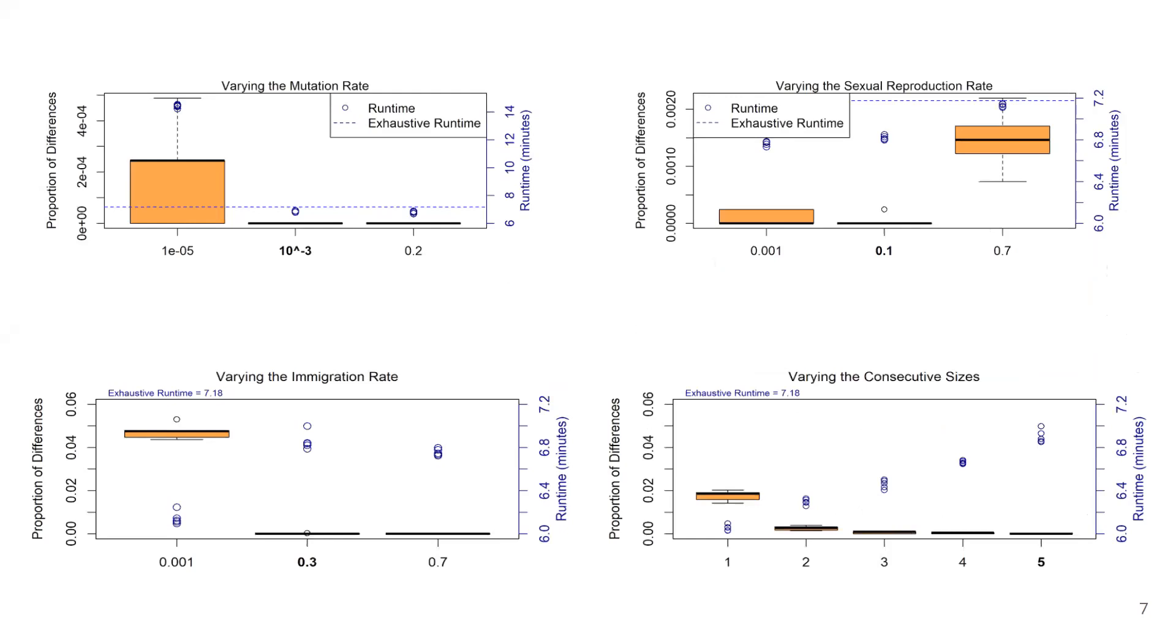For mutation rate, we look for the value that minimizes both runtime and proportion of differences. We chose 0.2 as our optimal value. For sexual reproduction rate, we chose 0.001.